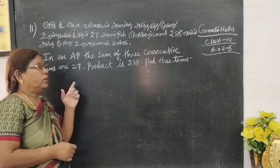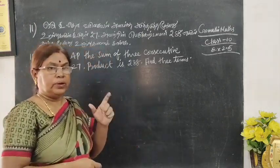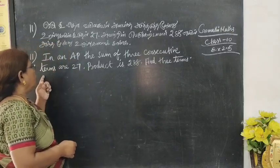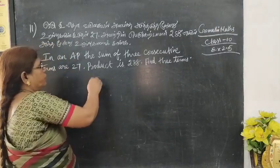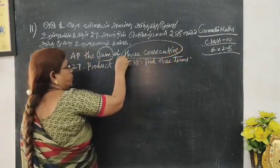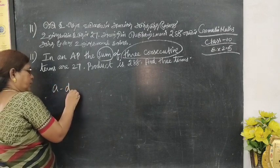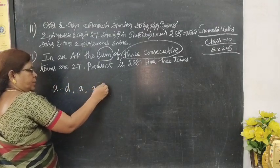You are given 3 consecutive terms, and the 3 consecutive terms total 27. Sum of 3 consecutive terms: the three consecutive terms are A minus D, A, and A plus D.